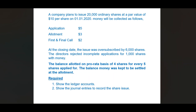The company plans to issue 20,000 ordinary shares at a par value of $10 per share on 1st January 2020. Money will be collected as follows: application money $5, allotment money $3, first and final call money $2. At the closing date the issue was over subscribed by 6,000 shares. The directors rejected incomplete applications for 1,000 shares. The balance was allotted on pro rata basis of 4 shares for every 5 shares applied for.